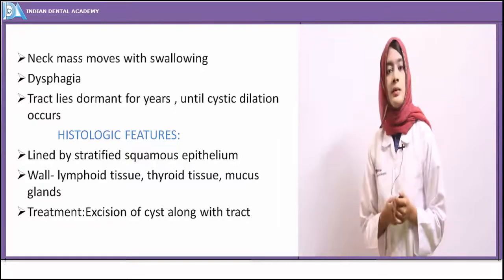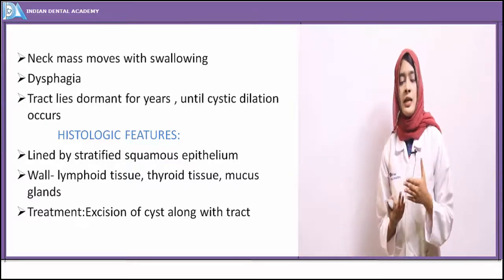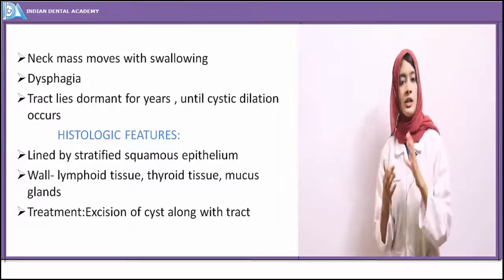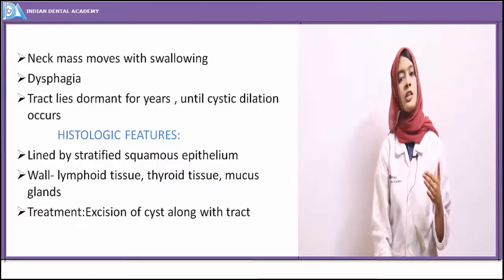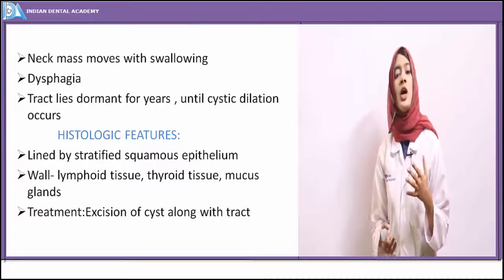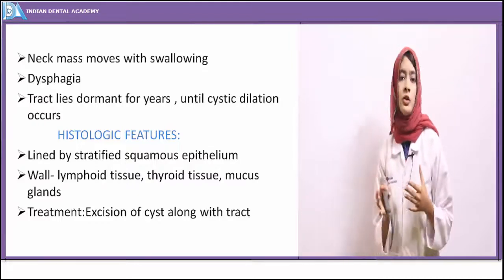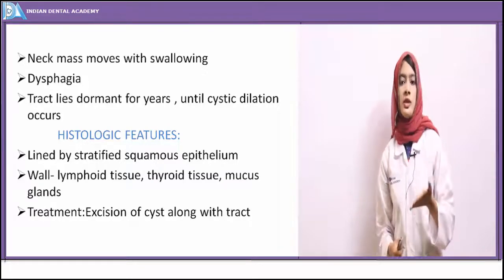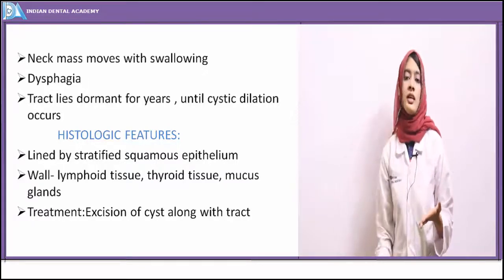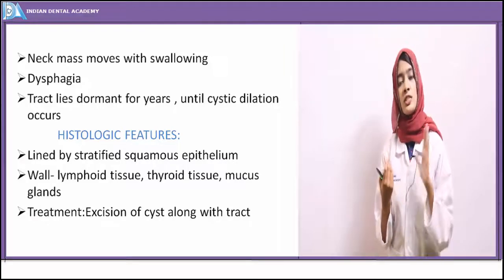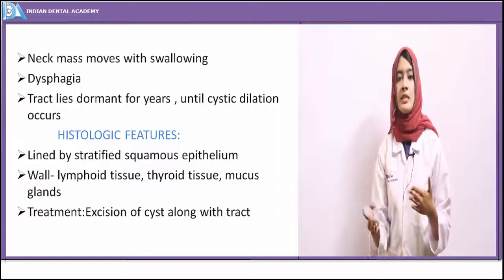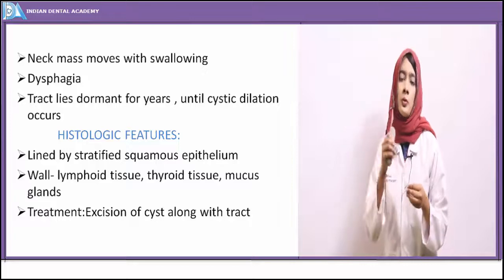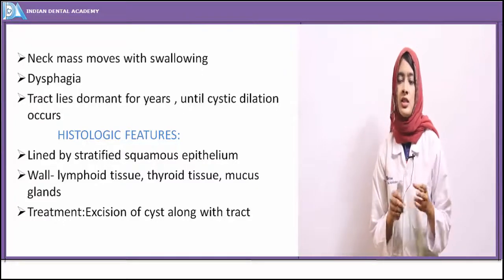Microscopically, the cyst shows a stratified squamous epithelium lining, and the connective tissue wall shows presence of thyroid tissue, lymphoid tissue, and mucous glands. Treatment for thyroglossal duct cyst is excision of the cyst along with the tract — remnant of the tract may lead to recurrence. This is the Sistrunk operation. Sometimes, because the cyst is attached to the hyoid bone, a portion of the hyoid bone may also have to be surgically removed.